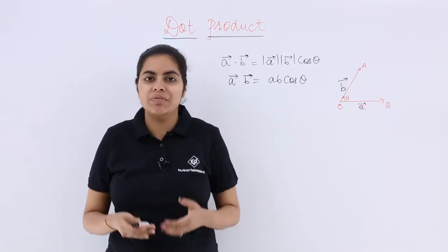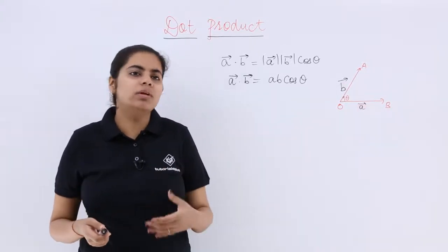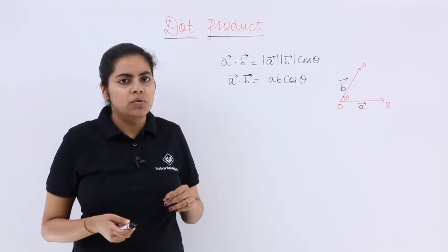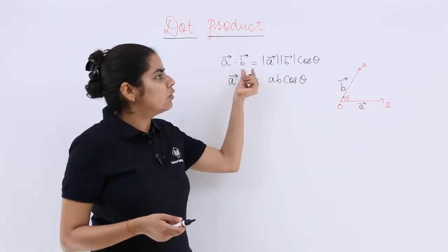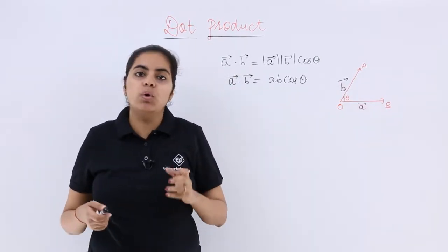Now after knowing about the definition of scalar product, let's know some more details to this topic. What if either of these vectors is 0 or both of them is 0?